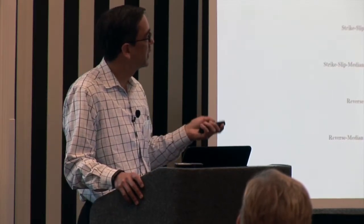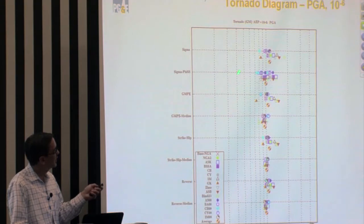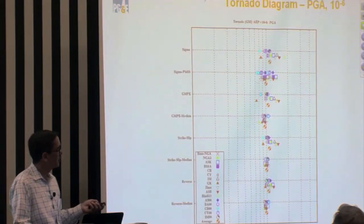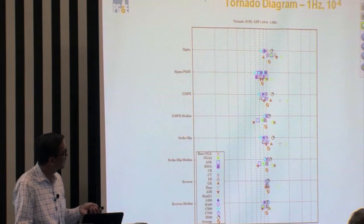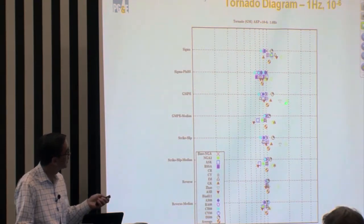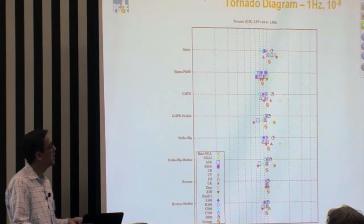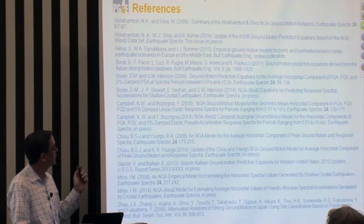For PGA at 10 to the minus 6, the distribution of data points is a little bit wider but individual trends and models remain similar. For 1 Hz at 10 to the minus 6, ground motion ratios are getting up to about 2. This is where the BINDI's large sigma starts having a bigger impact, as you would expect at the 10 to the minus 6 level. Finally, these are the references for all the models discussed.